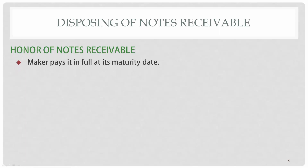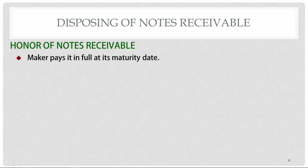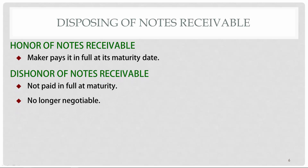When that note's time period is up, either the note is going to be honored — meaning the maker, the one who owed the money, pays it in full on the maturity date just like they're supposed to — or if they do not pay at maturity, the note is considered dishonored. A dishonored note is no longer a negotiable or valid note, so we have to do something with it.